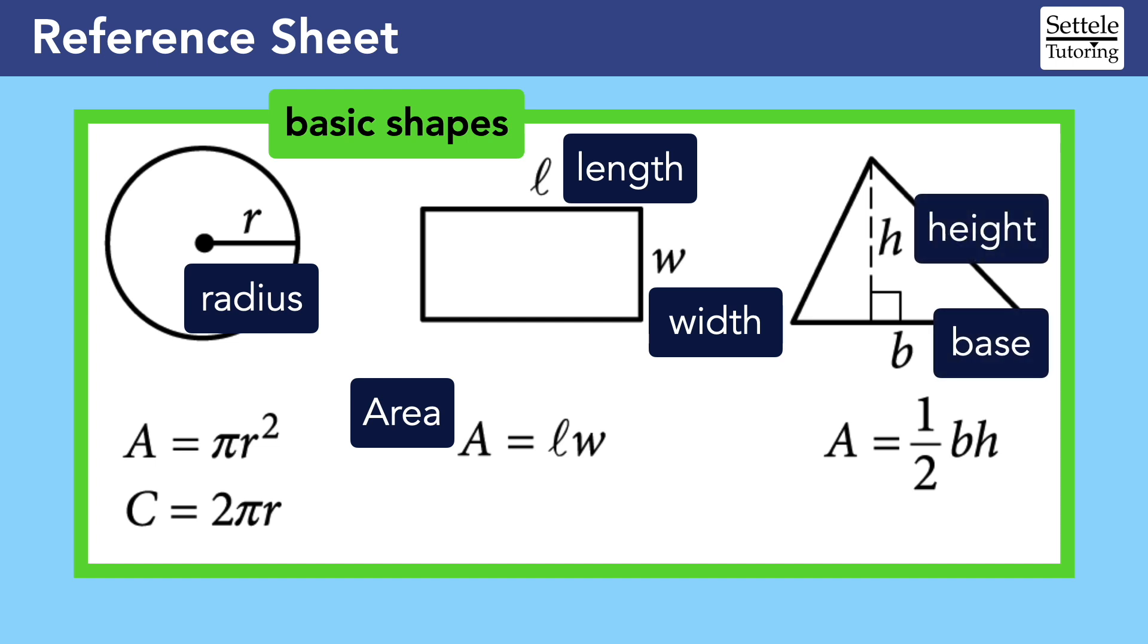With the triangle, it's important to note that the base and height must be perpendicular. That is, they must form a right angle. For right triangles, we can use the two legs as the base and height, but for other triangles, you will likely need to use a height that goes through the middle of the triangle like it does in this diagram.